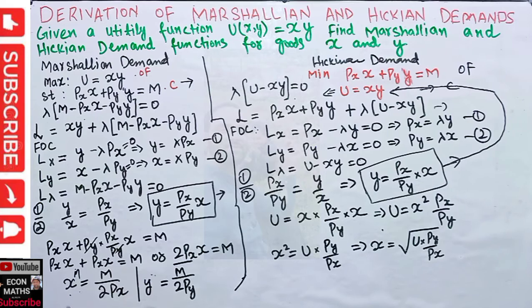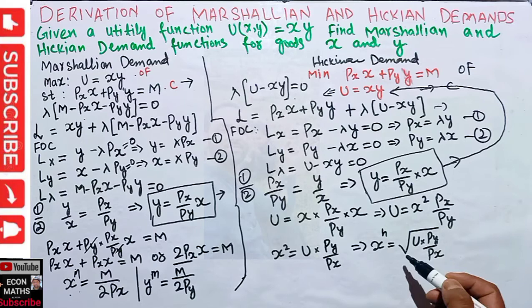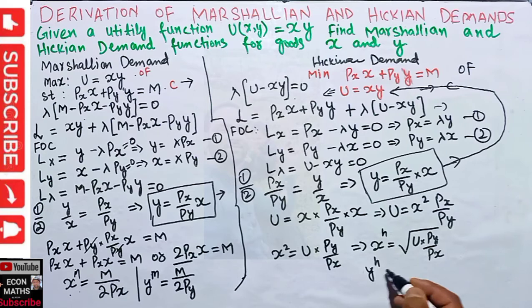Similarly, the Hicksian demand function for good y is: yH = √(U·Px/Py). We use the subscript H to distinguish Hicksian demand from Marshallian demand.